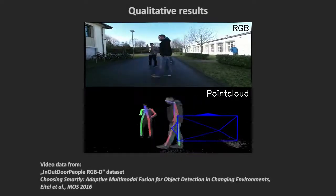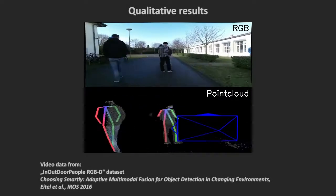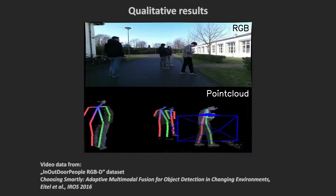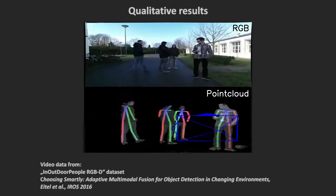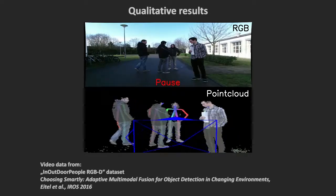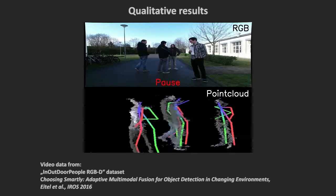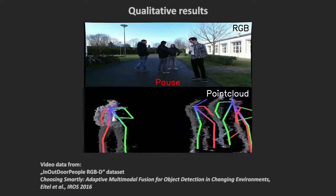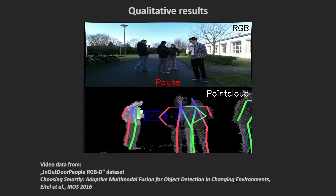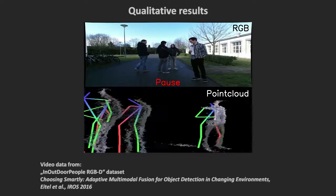Here we show qualitative results on a publicly available dataset that contains challenging scenes with multiple people recorded indoors and outdoors. It shows that our approach generalizes well to unseen data.